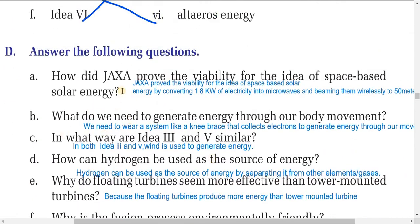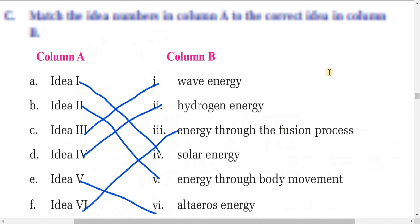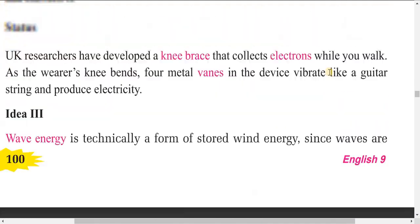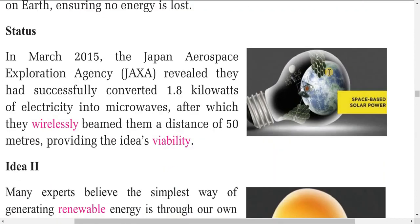Now let's do the question and answer exercise. Question: How did JAXA prove the viability of space-based solar energy? JAXA — the Japan Aerospace Exploration Agency — proved the viability by converting 1.8 kilowatts of electricity into microwaves and wirelessly beaming them a distance of 50 meters, proving the idea of viability.